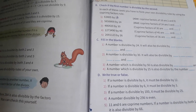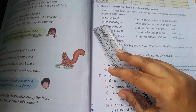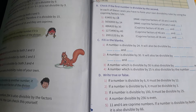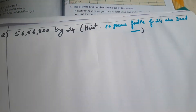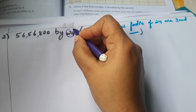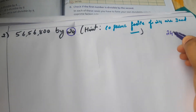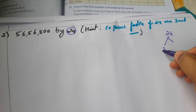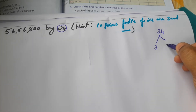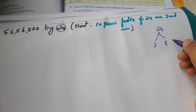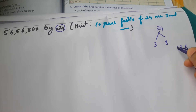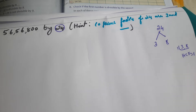Second question: 56,56,800 divided by 24. We have to find the co-prime factors of 24. The co-prime factors of 24 are 3 and 8, since 3 eights are 24. Both numbers only multiply with 1 in common, so HCF of 3 and 8 is 1 — therefore 3 and 8 are co-prime.